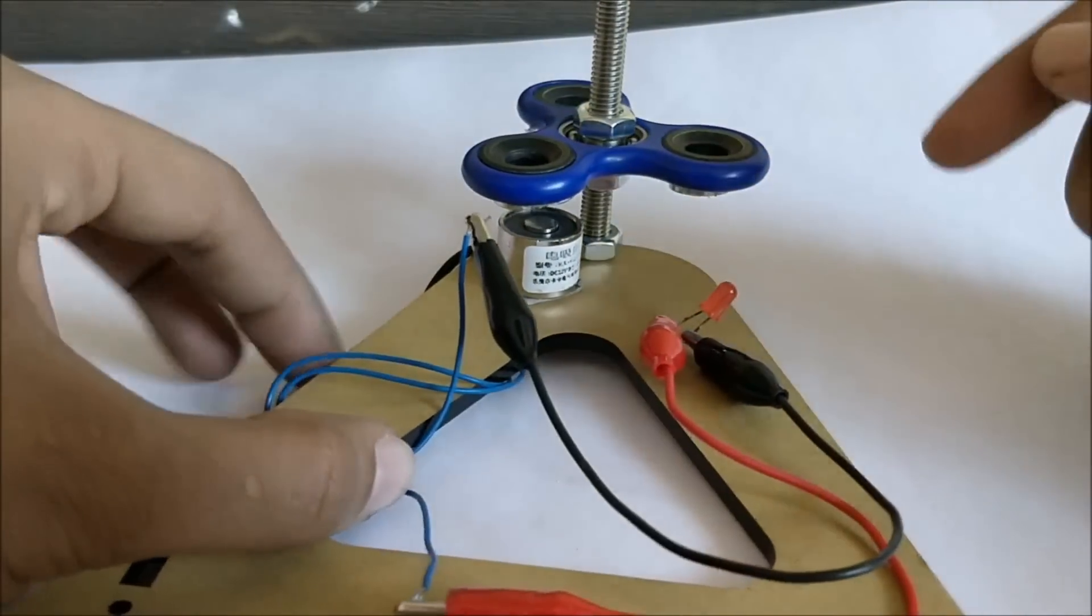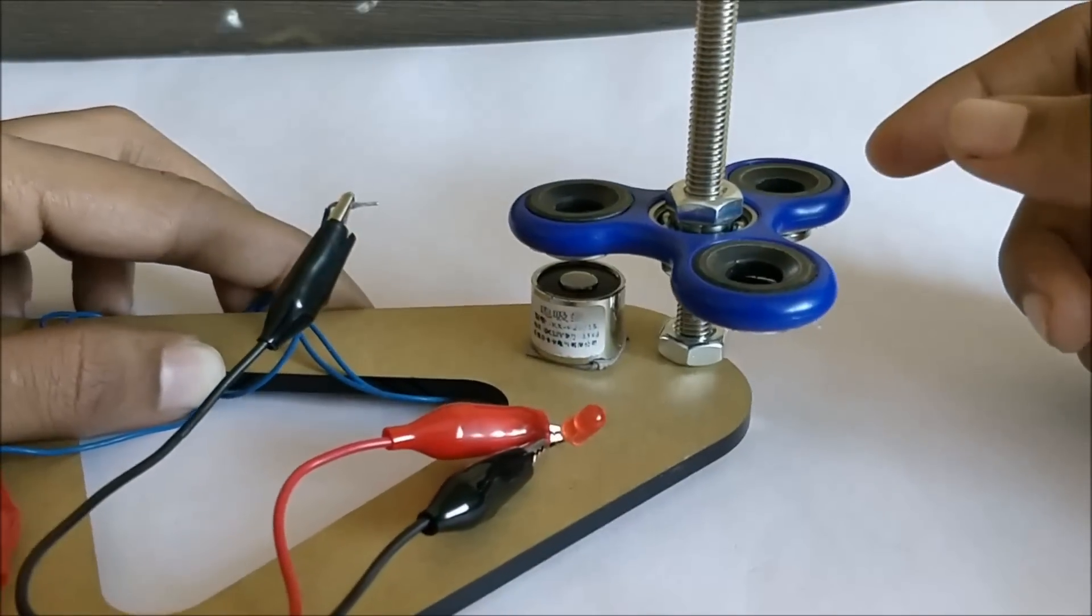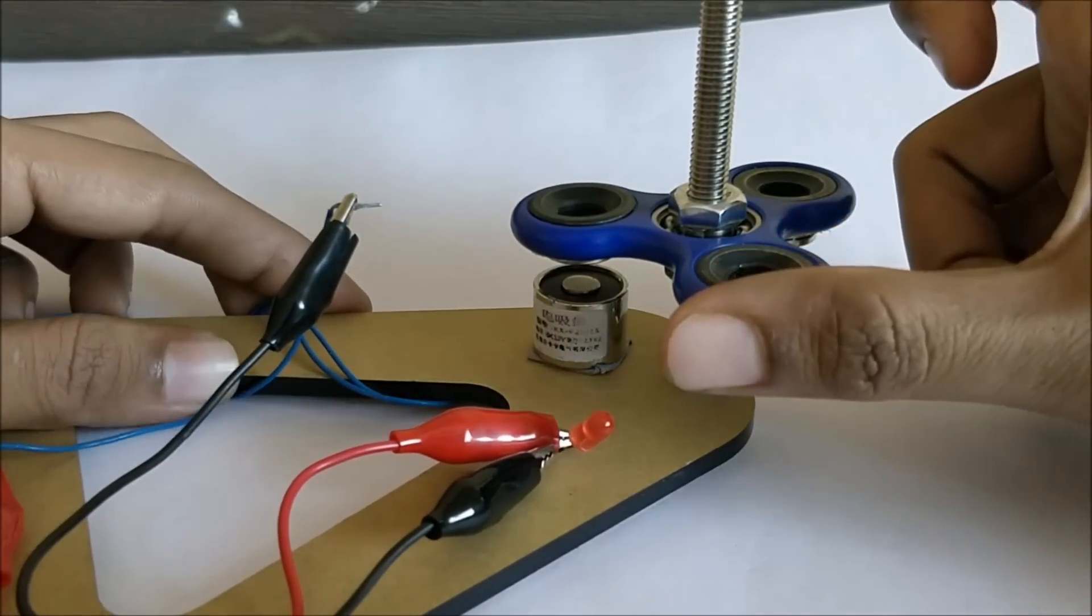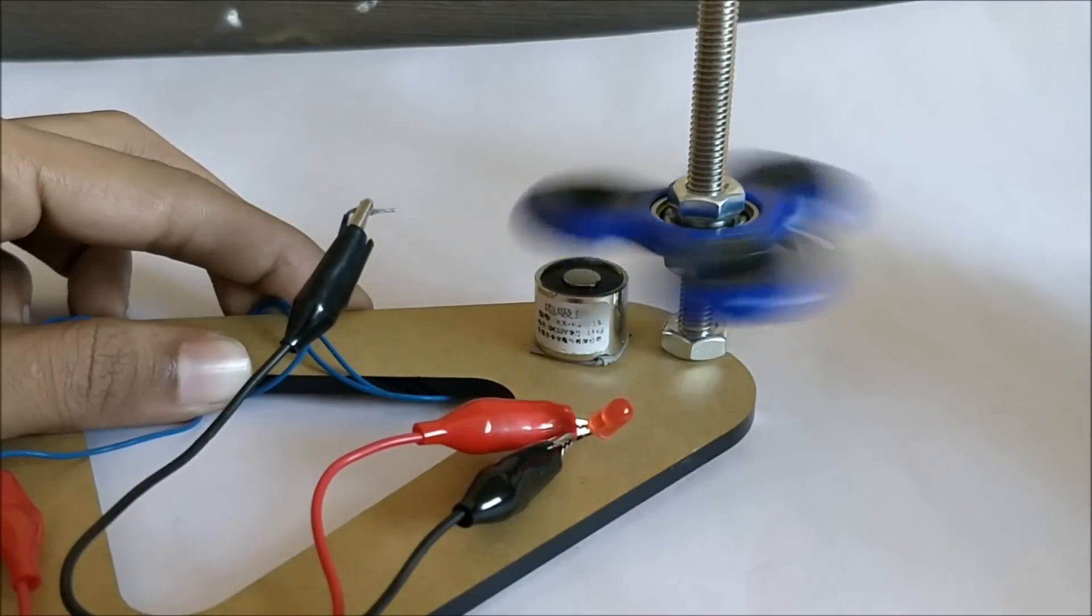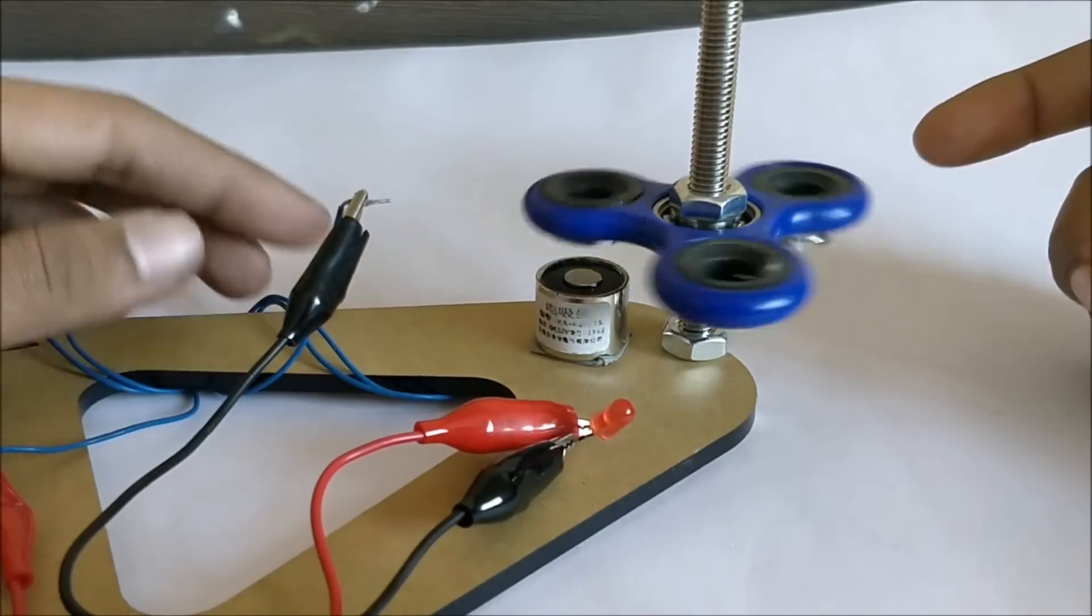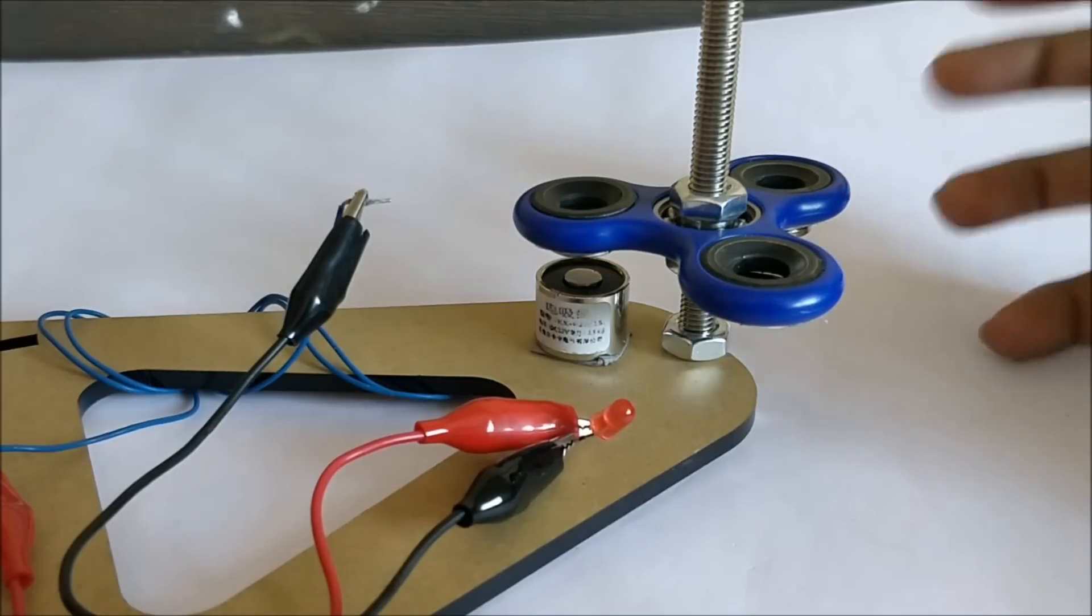Another interesting thing that we can note here is that whether you rotate the fidget spinner in clockwise or in anti-clockwise direction, the LED is glowing. So what this actually signifies is that the voltage produced here is actually an AC voltage and it's not a DC.